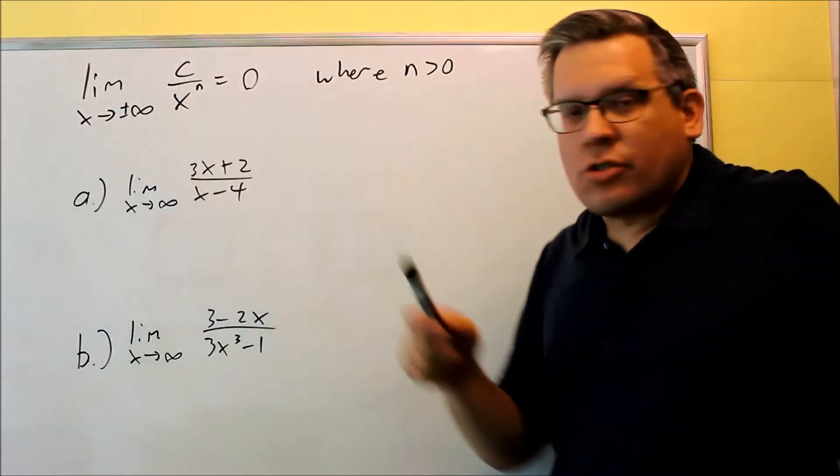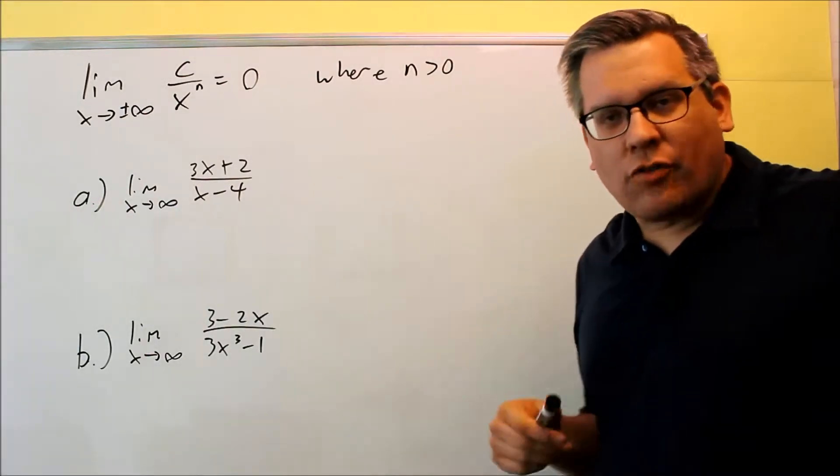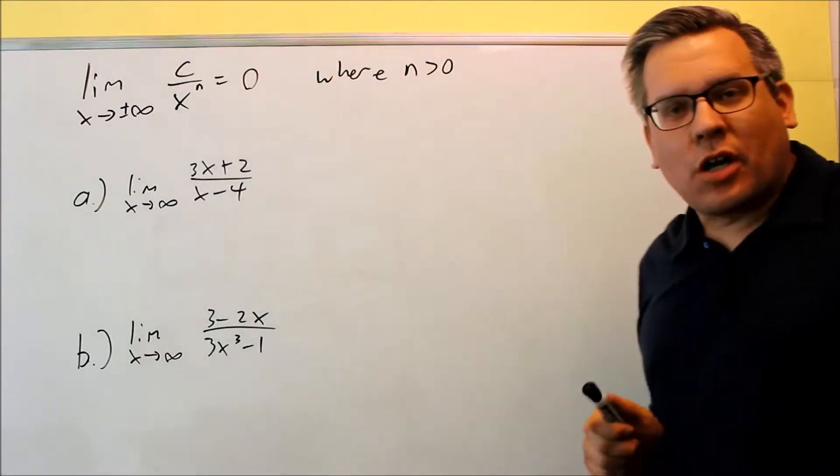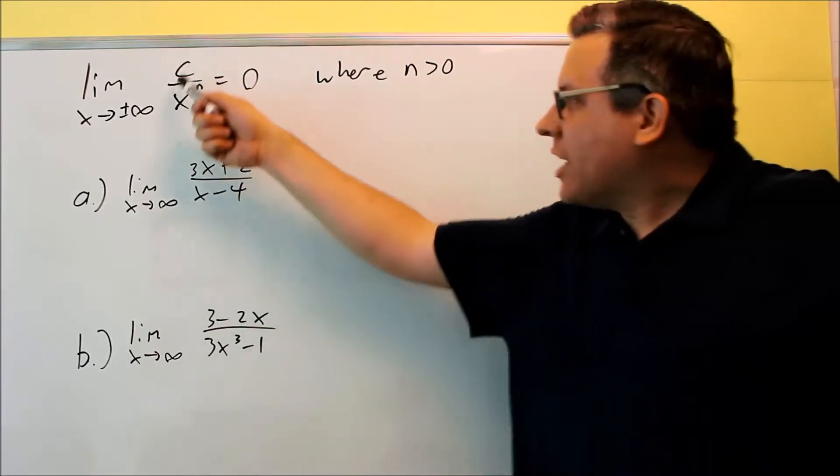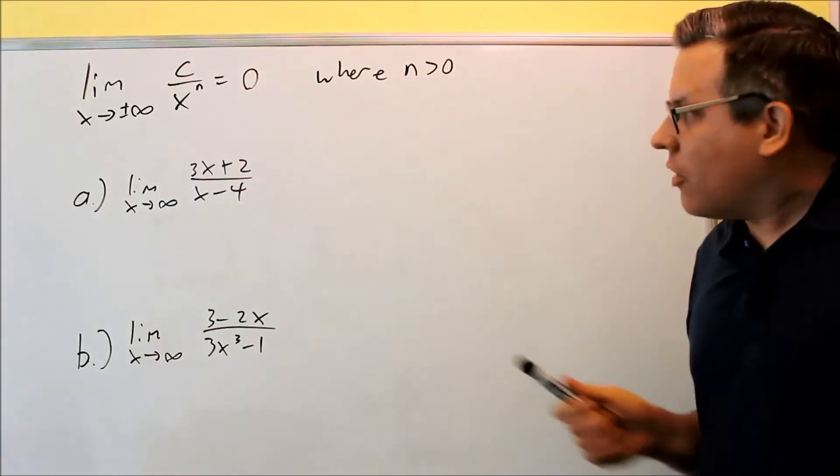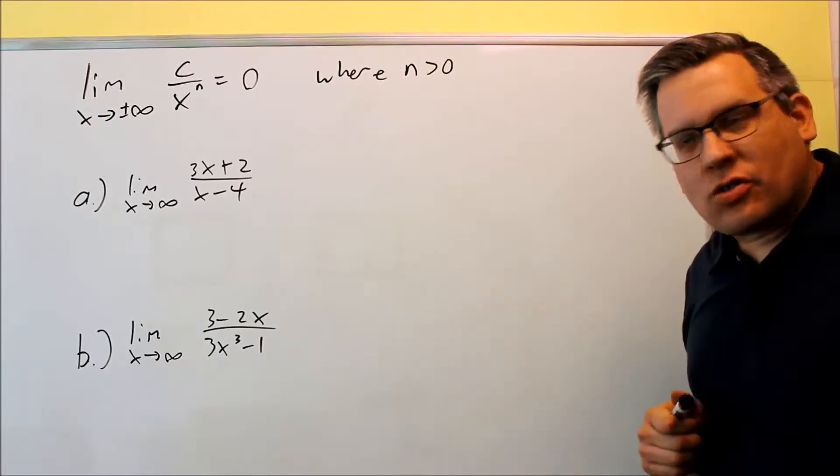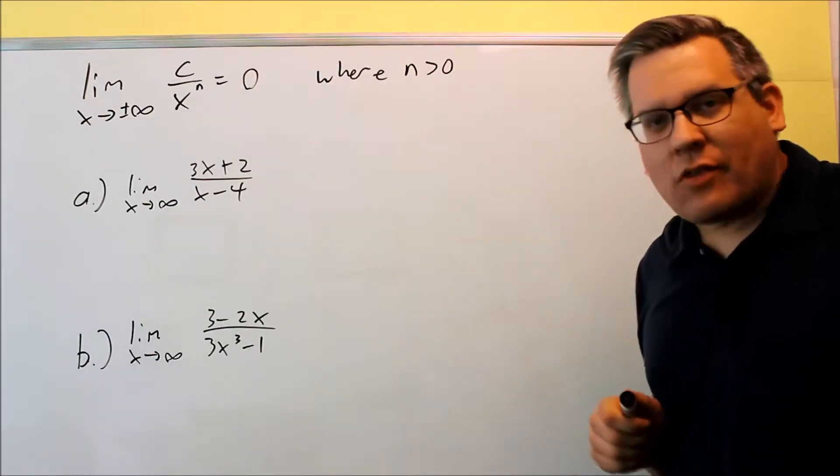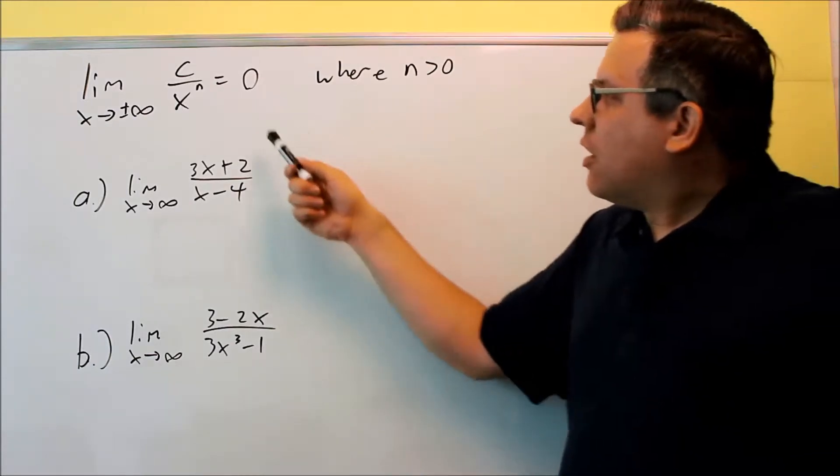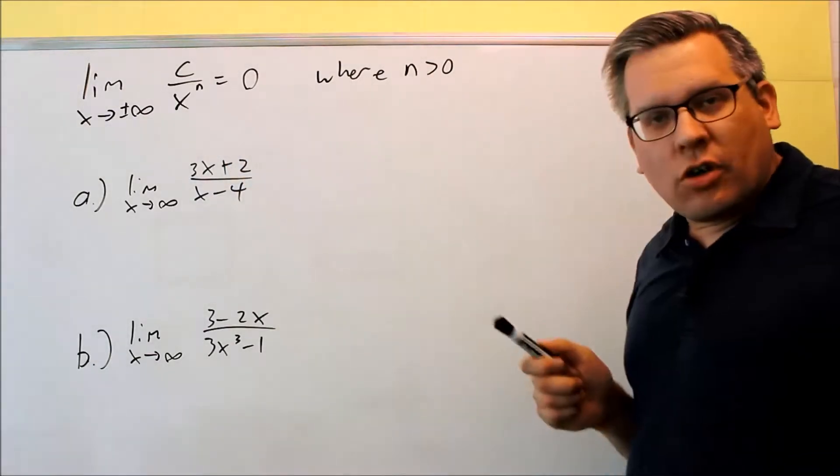So this is the limit as X approaches, if you approach positive or negative infinity, your C is some kind of constant, and if you're dividing it by X to a power, now as long as that power is greater than zero, this doesn't have to be integers, could be X to the 1 half or 5 halves, it doesn't matter, but as long as the n is greater than zero.